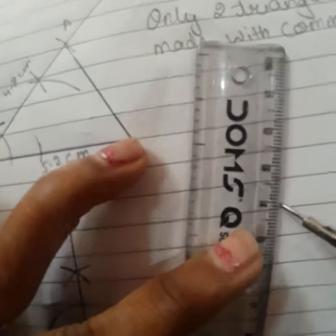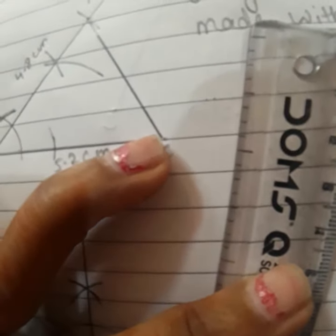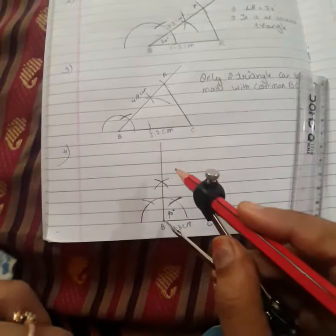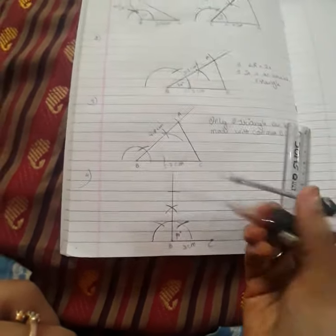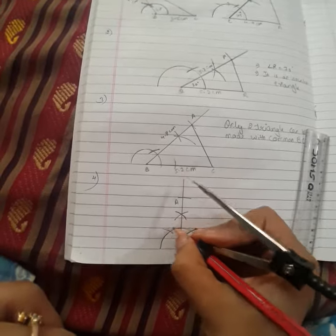Like this, put it on B and making an arc and labeling the arc as point A. And over here I will write 4 centimeter and join A to C to make a right angle ABC.